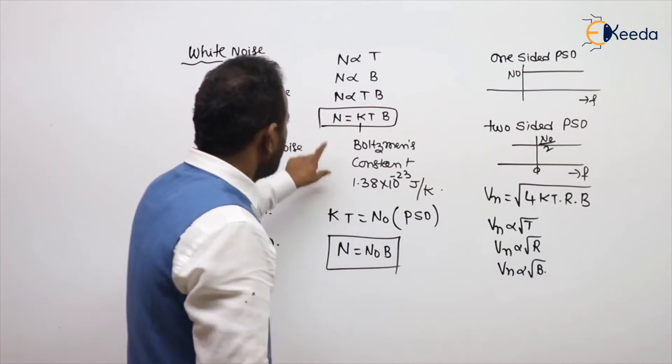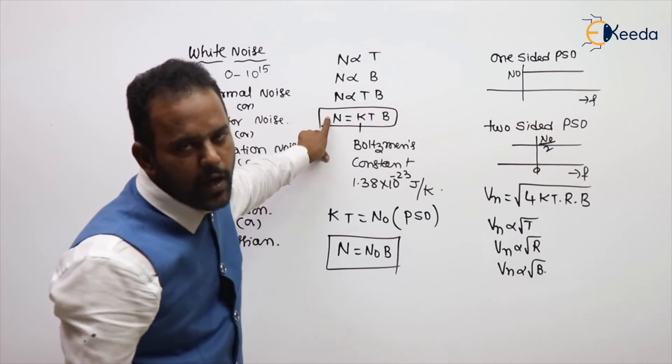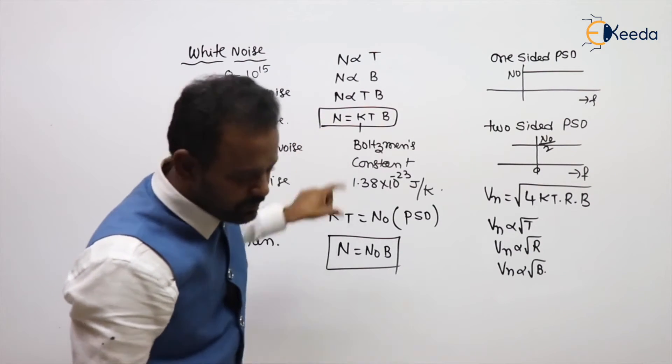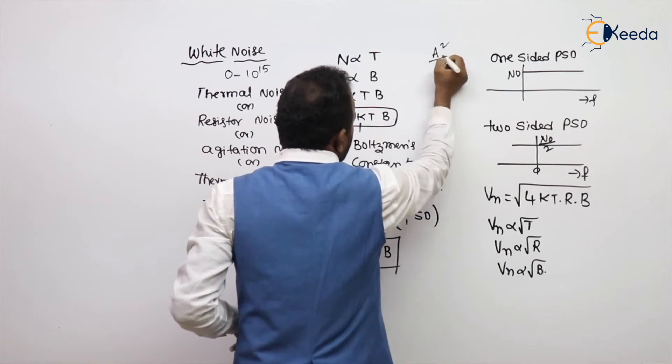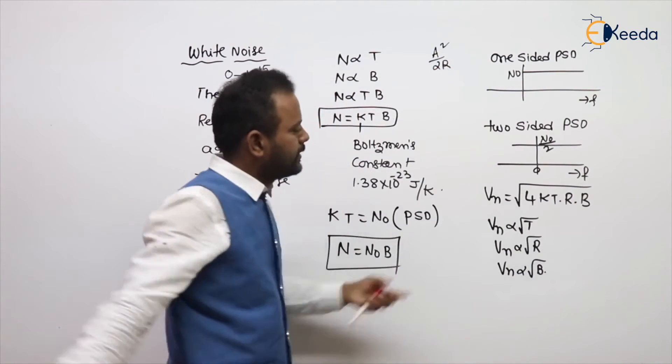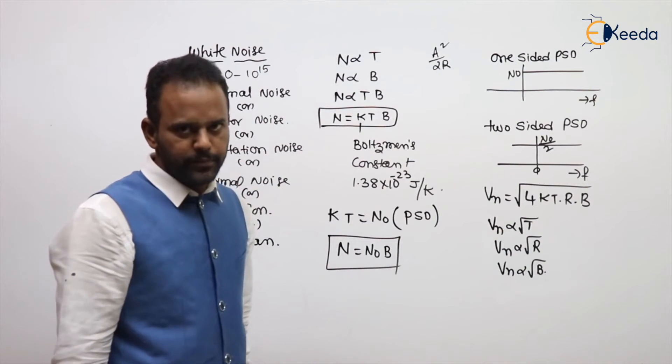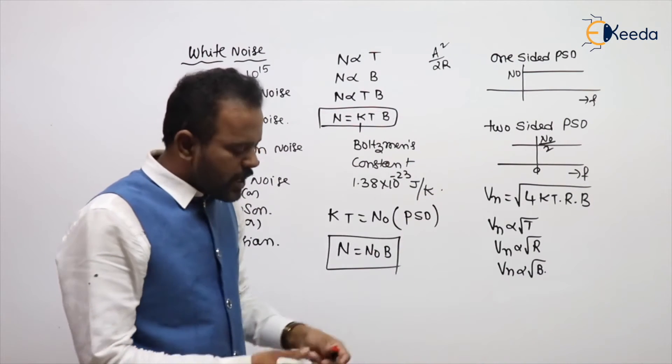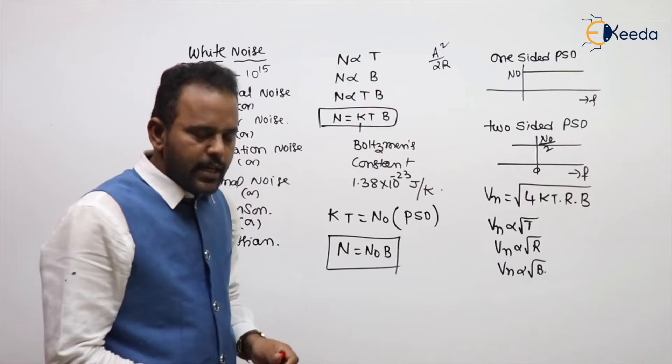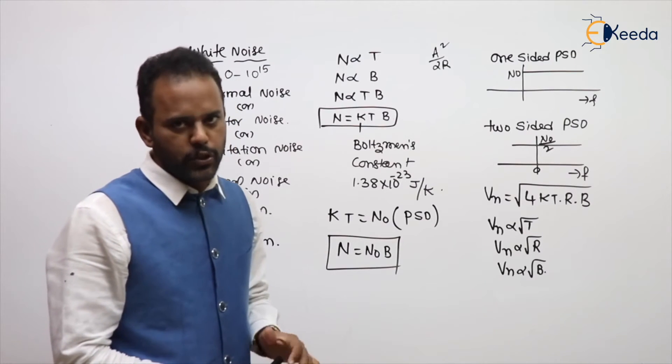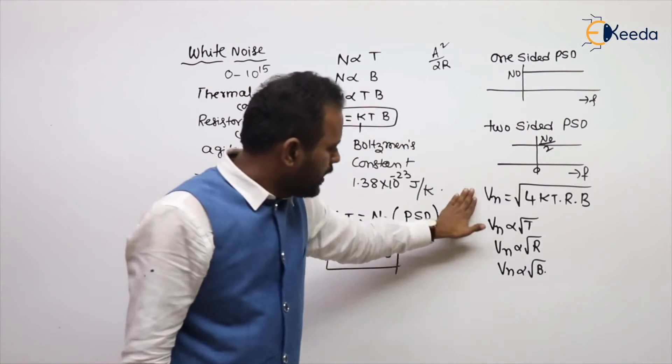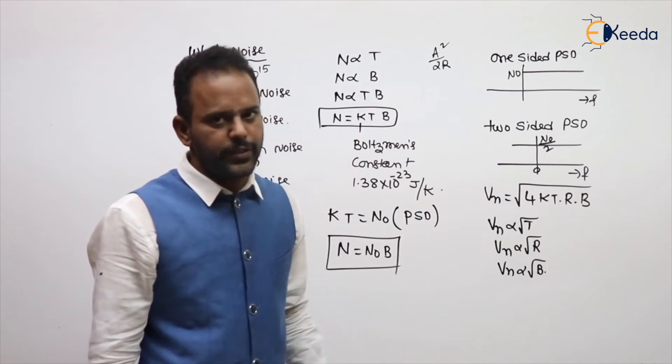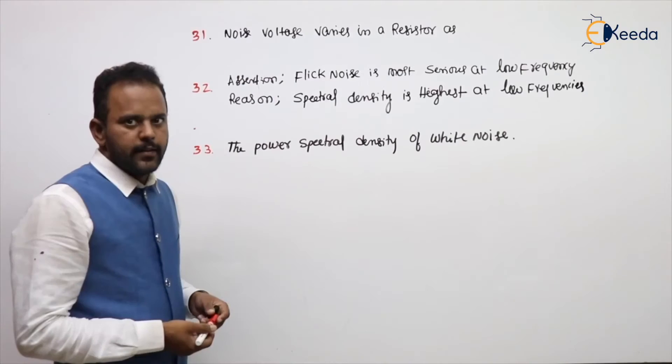Noise voltage is proportional to the resistance also. That is, if you take the RMS, V square by 2R, where power is nothing but A square by 2R. This was also asked once in the previous ESE examination objective question. So noise power and noise voltage, clear?